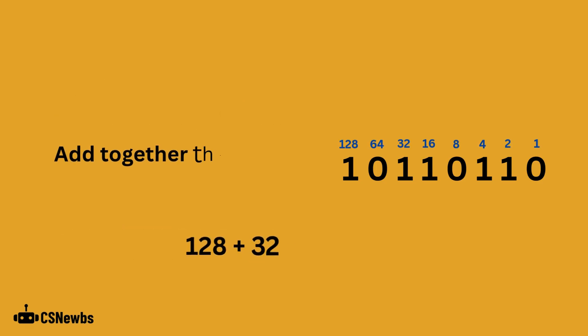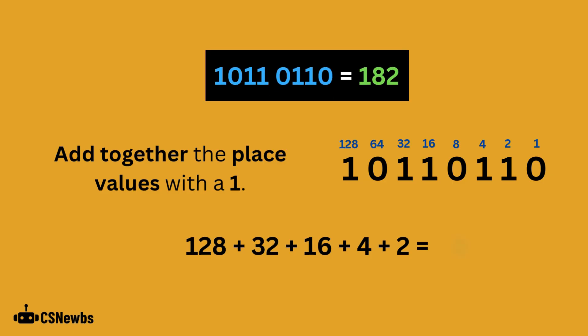Add together all the place values that have a 1 beneath the number. So 128 plus 32 plus 16 plus 4 plus 2. Adding those values together gives 182. So 10110110 is equivalent to 182.